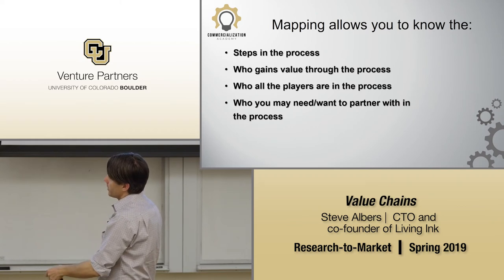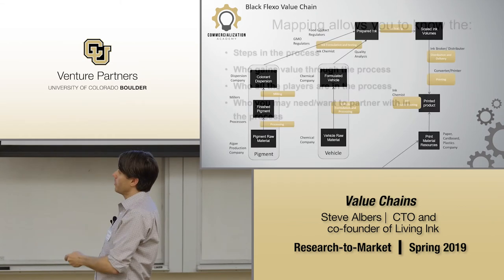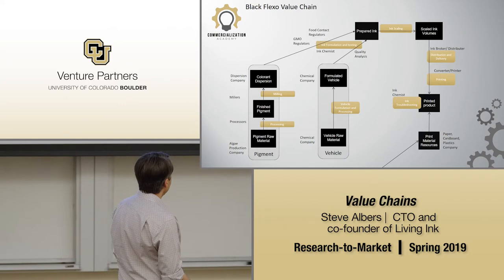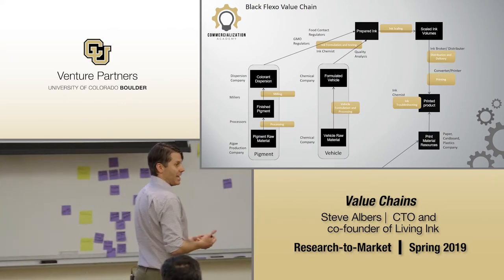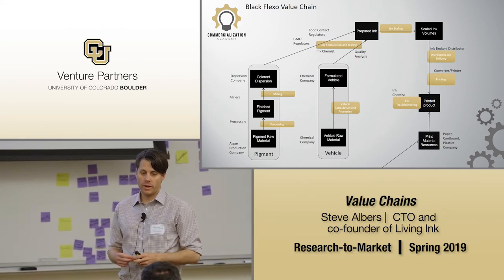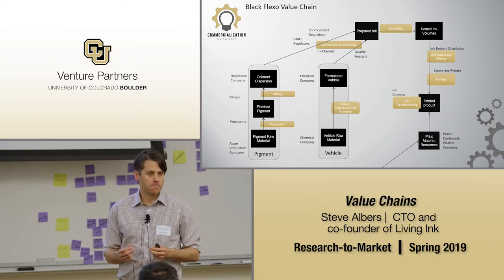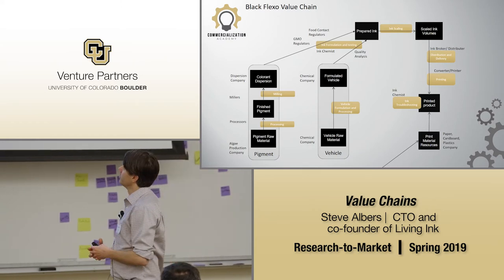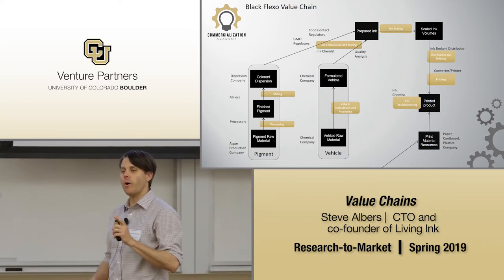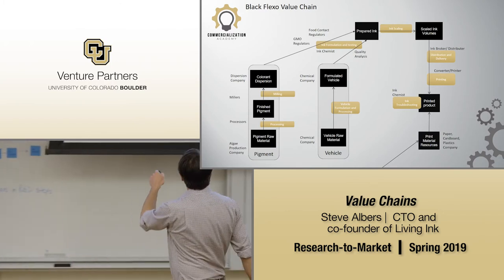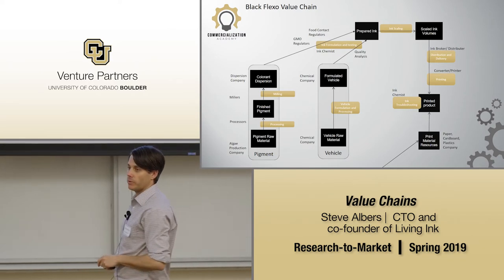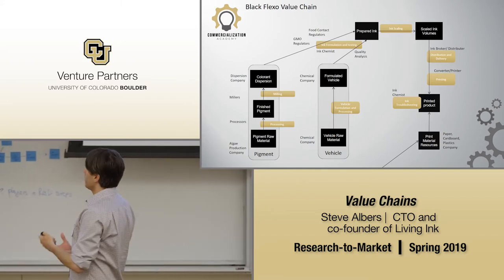Here are the players in the process and who you may need to partner with — I've put the names of companies that do each step. You can start saying: if I'm going to sell a food contact ink, what's going to stop me? USDA, food contact regulators. You can see all the different steps in the process and why getting through those regulators with a food contact ink actually makes it more valuable — increasing the value of the product through the value chain.